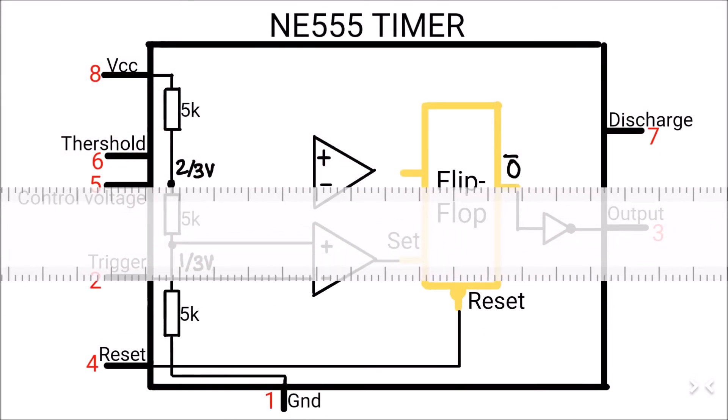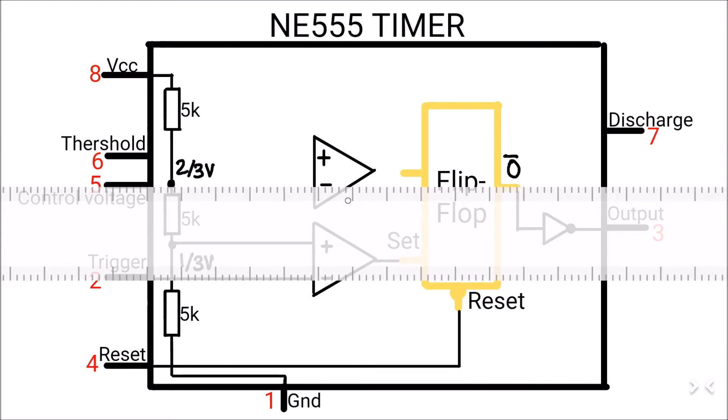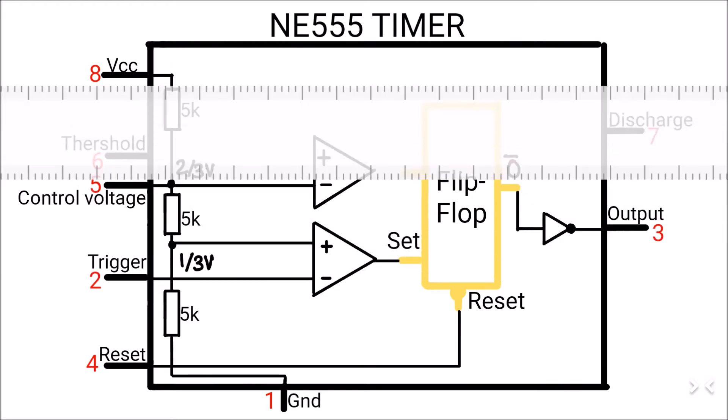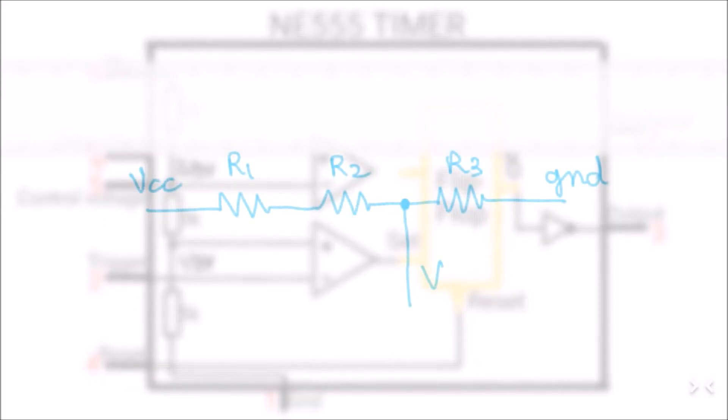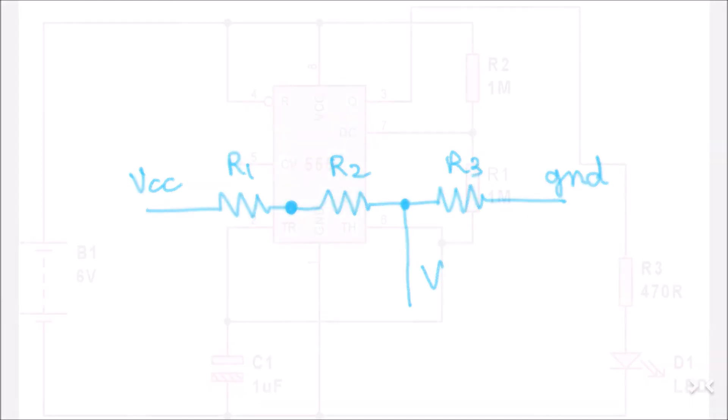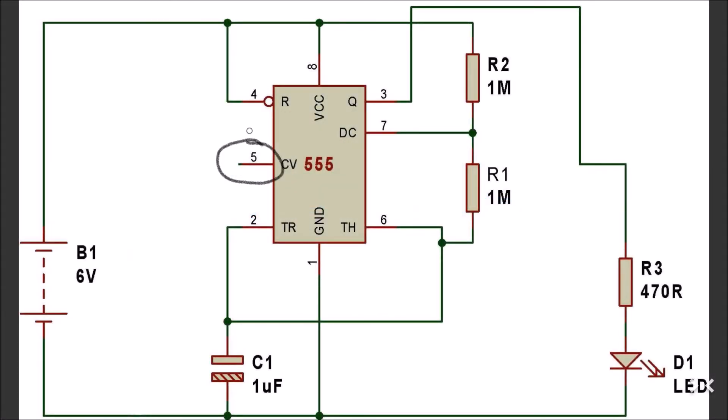The pin number 5 is the control voltage, which is connected to the negative input of the second comparator, but also to the voltage divider, which now has the potential of two-thirds of the supply voltage. So, by connecting different voltages to this pin, you can change the reference voltage of the voltage dividers. That is why in many circuits, this pin is left loose.